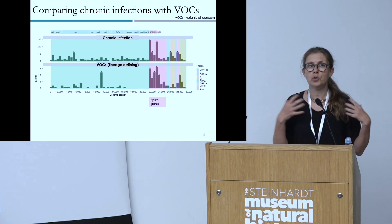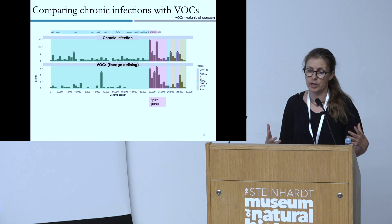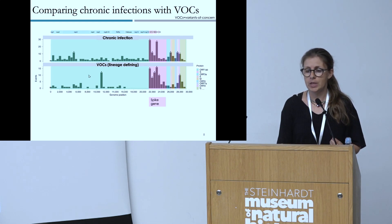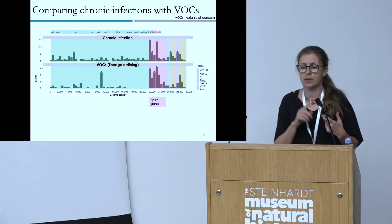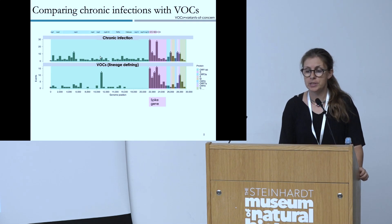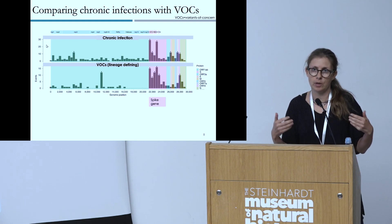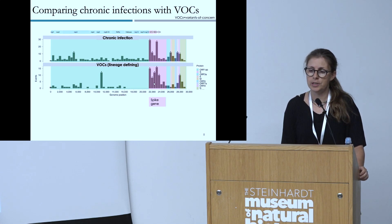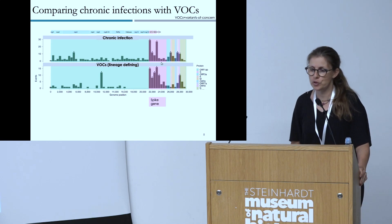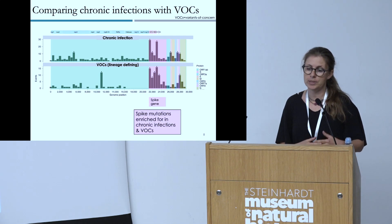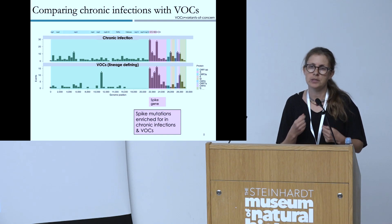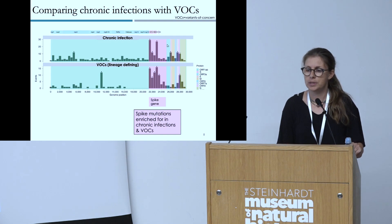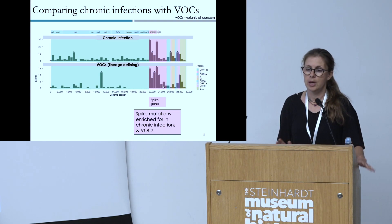When we look at all the mutations found in these 27 chronic infections and compare them to the mutations defining the variants of concern — Alpha, Beta, Gamma, Delta, and Omicron — we see a very similar pattern. The x-axis is the genome, the y-axis is number of mutational events. You can clearly see the large bars in the pink spike gene region. Spike mutations are enriched in both chronic infections and variants of concern — we literally see the same mutations, such as position 501 and position 484.